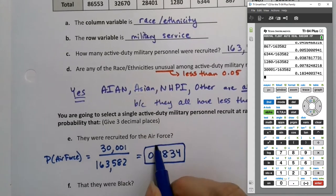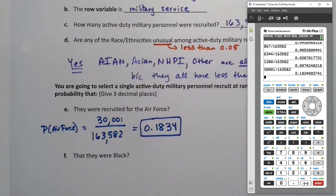And we get 0.1834. Oh, I went four decimal places instead of three. Oh, well. Too late now. All right. So that's the probability of Air Force.